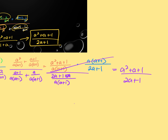Both methods give the same answer. If the denominators are simple or the same, use method one (multiply by LCD). If the LCD of the numerator equals the LCD of the denominator, also consider method one. But you get to choose. With extra time you could check using the other method.